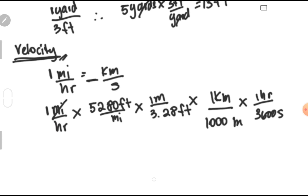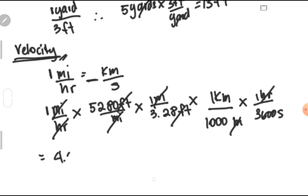Canceling the similar units — miles divided by miles equals 1, kilometers divided by kilometers equals 1, hours divided by hours equals 1 — and canceling out the similar units, we get 1 multiplied by 0.280 times 1 divided by 3.28 times 1 over 1,000 times 3,600, giving us 4.47 times 10 raised to negative 4 kilometers per second.